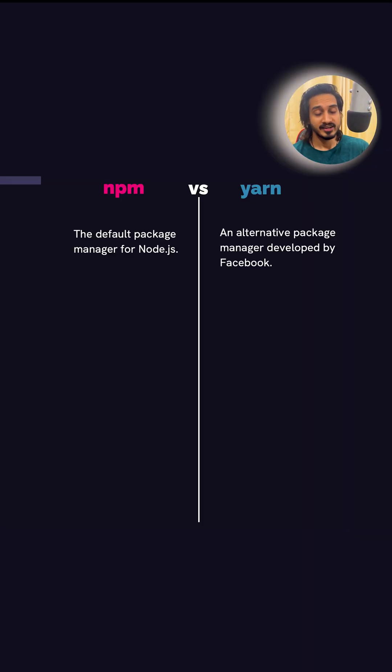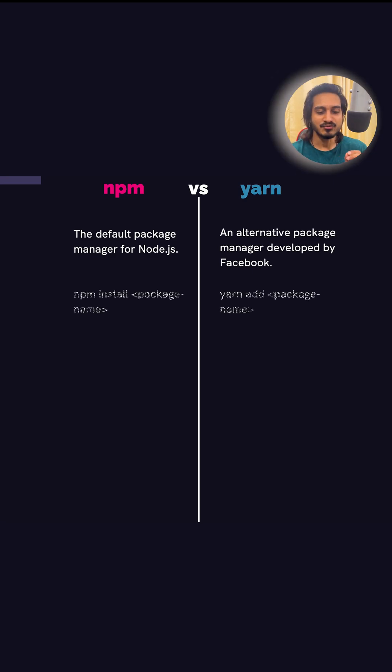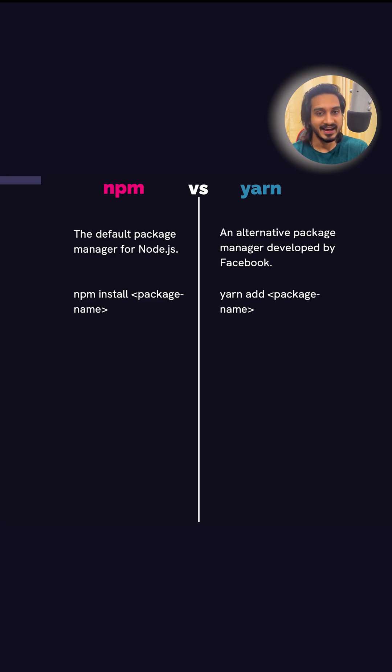NPM is the default package manager for Node.js. YARN is developed by Facebook as an alternative to NPM. The syntax is as follows: for NPM, use 'npm install'; for YARN, use 'yarn add' then the package name.